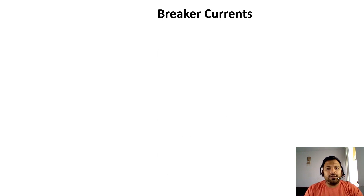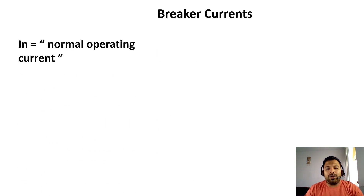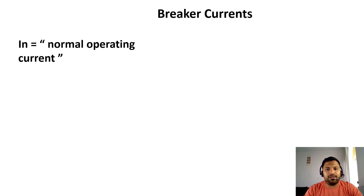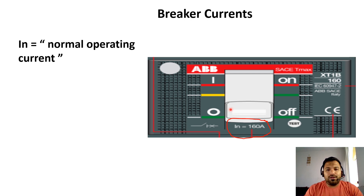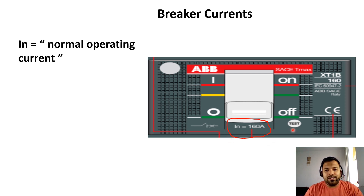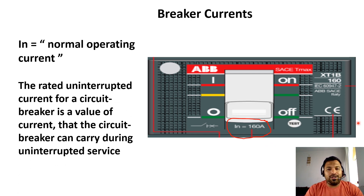Breaker currents: the first one is the IN current. What is IN current? At the circuit breaker, at normal operating condition, how much current will flow — that is called the IN current or normal operating current. If you see this particular circuit breaker, IN is equal to 160 amperes. So this circuit breaker's normal operating current is 160 amperes. The rated uninterrupted current for your circuit breaker is a value of current that the circuit breaker can carry during uninterrupted service.